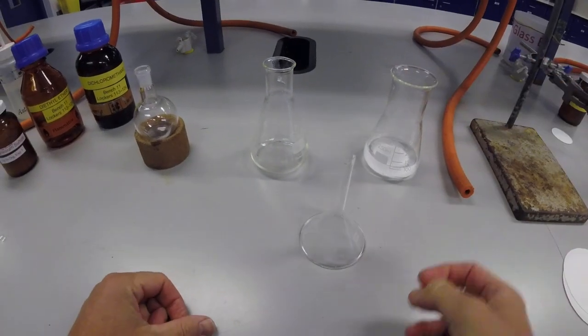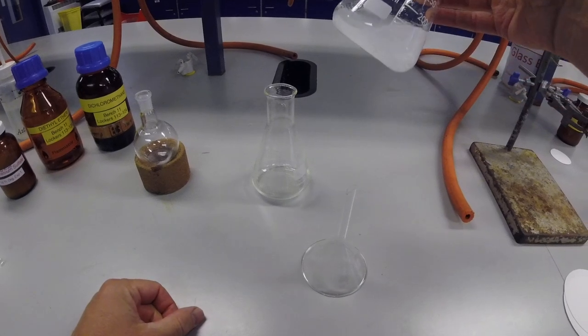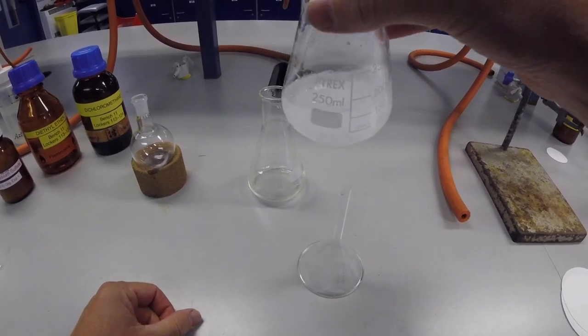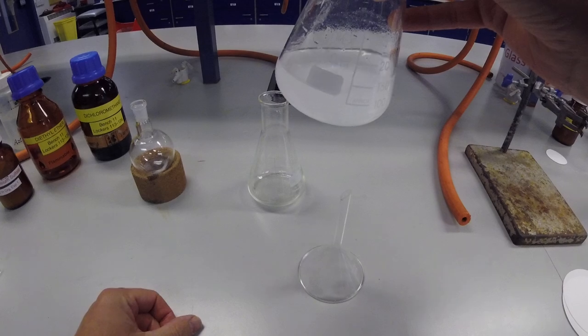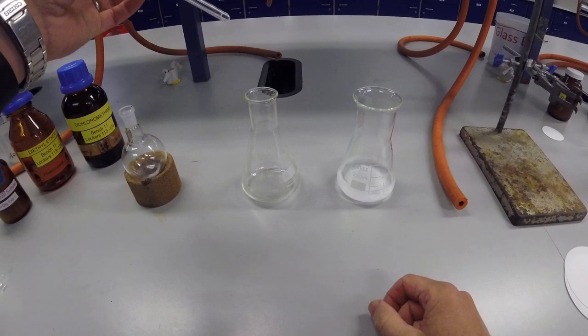Okay, so now I'm going to talk to you about filtering things, and we've got our solution with our suspension of magnesium sulphate that we want to filter. Works for filtering anything else. The simplest method is gravity filtration.